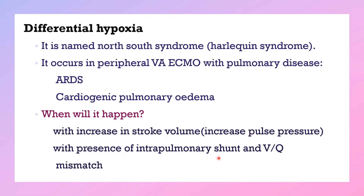It will occur when the heart starts to recover and has increasing stroke volume — reflected by increased pulse pressure — while the lung is still diseased with intrapulmonary shunt or VQ mismatch. This leads to differential hypoxemia: the upper part of the body will be blue and the lower part will be red.